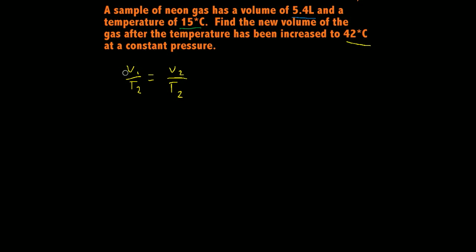It doesn't really matter if you know that this is Charles' Law or Boyle's Law, just as long as you know you can have P1 V1 and P2 V2 over T1 and T2.